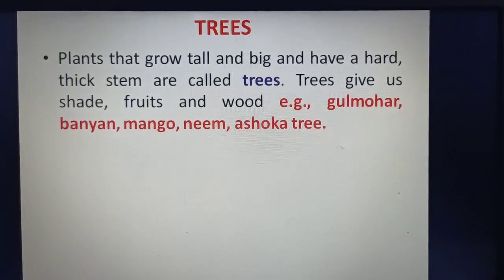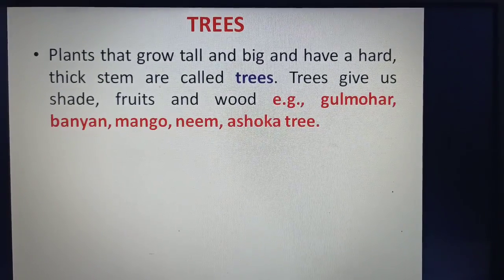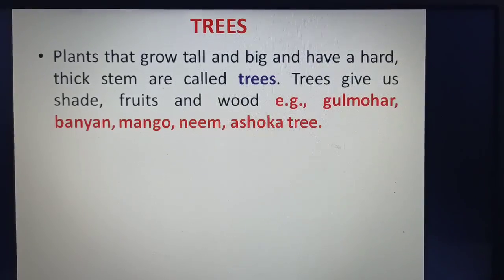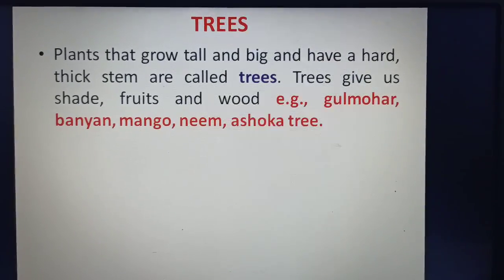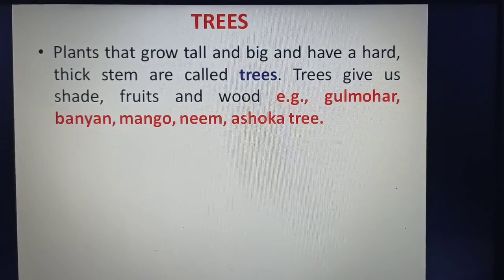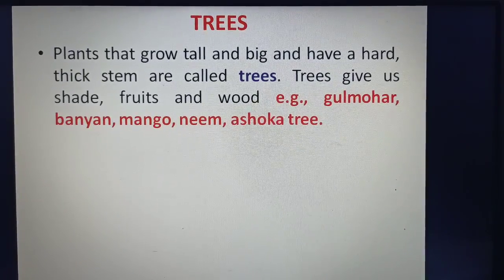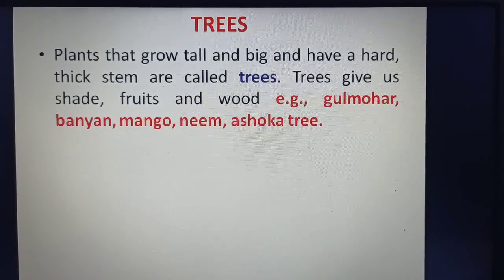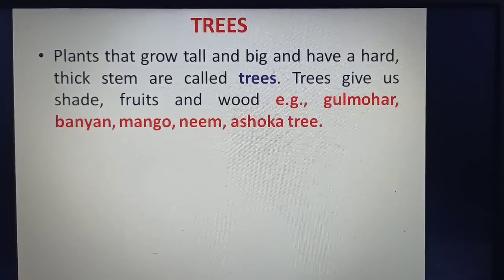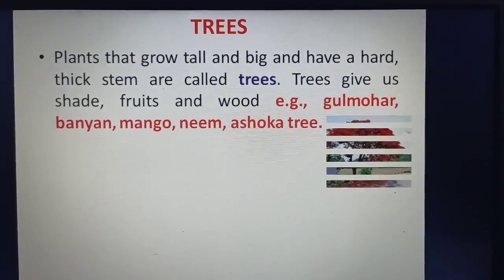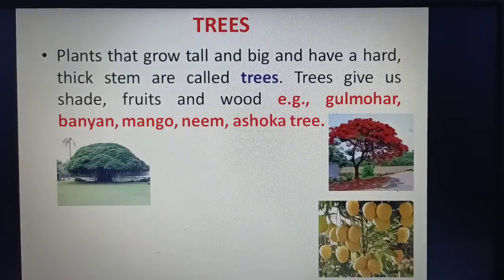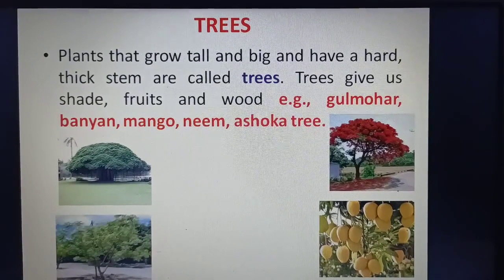Trees: Plants that grow tall and big and have a hard, thick stem are called trees. Trees give us shade, fruits and wood. Some examples of trees are Gulmohar, Banyan, Neem, and Ashoka.